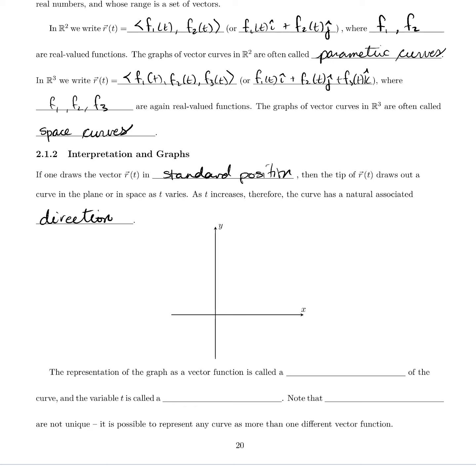So for example, if we had a curve in space, the tip of that vector r(t) would be pointing to some point on the curve. So this is, let's say, the r vector at some time t₀.